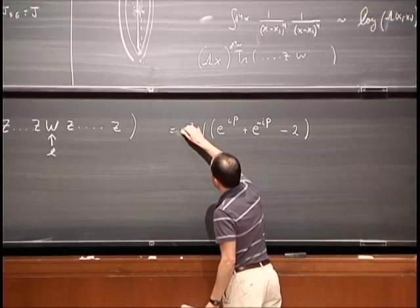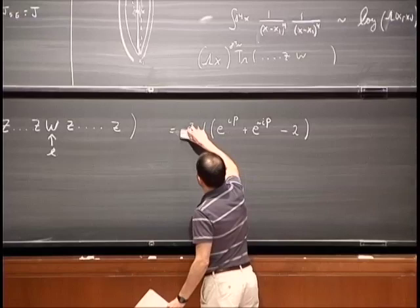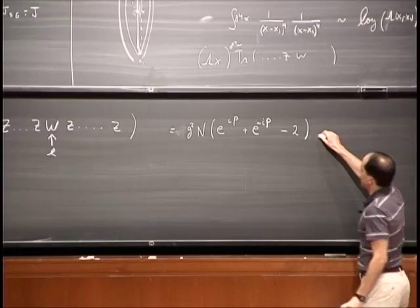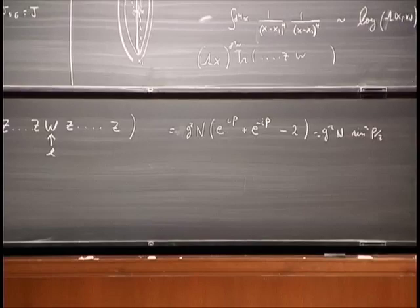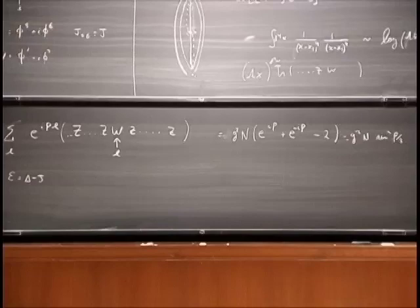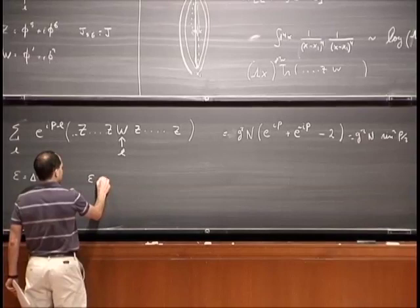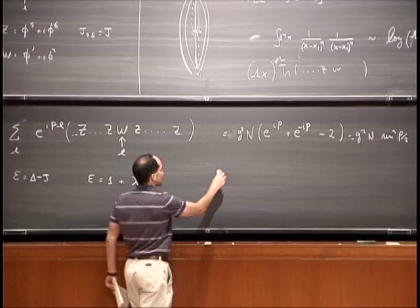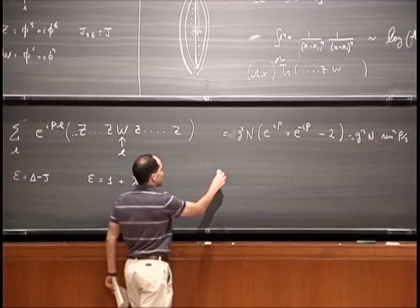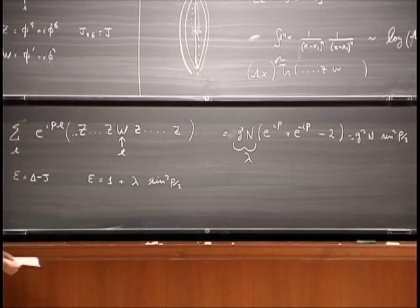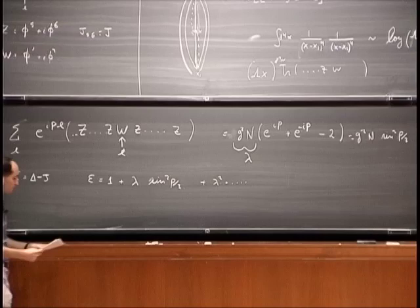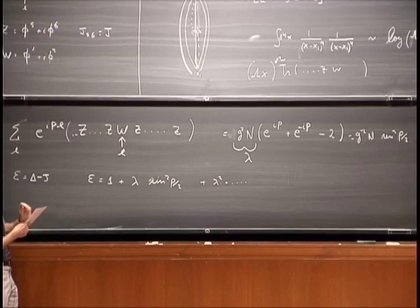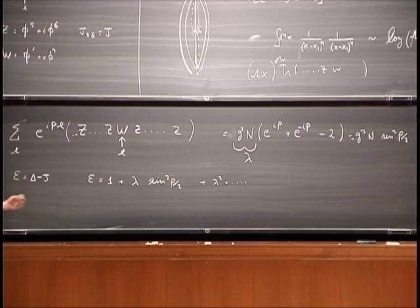There is some overall numerical coefficient you can compute. Let's say this number turns out to be one — it's not actually one but let's see. So here we got g²N times sin²(P/2). Now we were defining this energy as the anomalous dimension minus J — the energy above the ground state of many C's. For this excitation, we have E equals one plus lambda times sin²(P/2). That's the first correction, and then we'll have a series of corrections at higher powers in lambda.